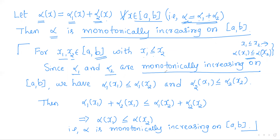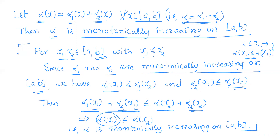For any two points x₁ ≤ x₂ in the domain, since α₁ and α₂ are monotonically increasing, α₁(x₁) ≤ α₁(x₂) and α₂(x₁) ≤ α₂(x₂). Adding these: α₁(x₁) + α₂(x₁) ≤ α₁(x₂) + α₂(x₂), that is α(x₁) ≤ α(x₂) by our definition. This shows that α is a monotonically increasing function.